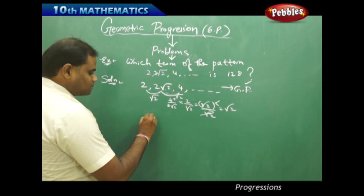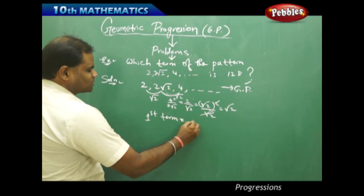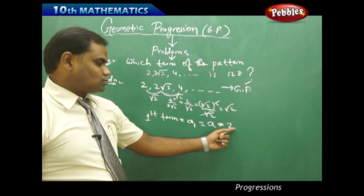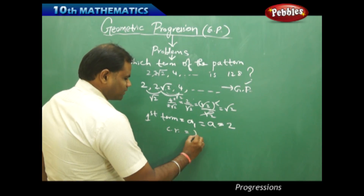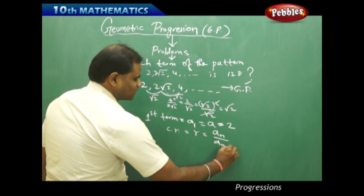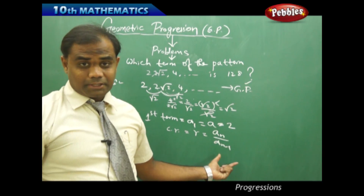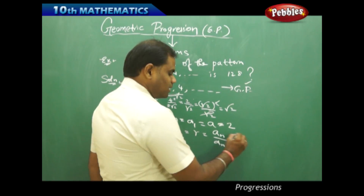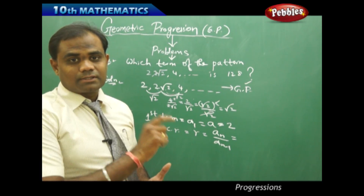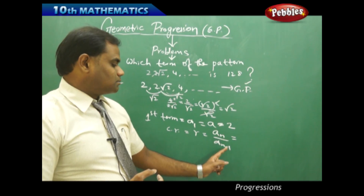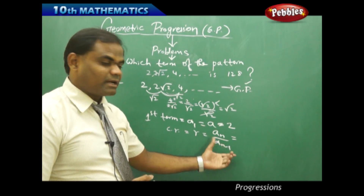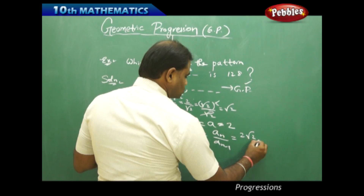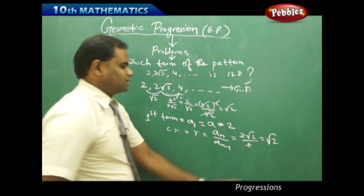Now to start with, my first term a₁ is a, which is 2. My a is 2, and my common ratio — given by the formula aₙ divided by aₙ₋₁, that is a term divided by its previous term — is the common ratio r. So if I take the common ratio of this I get 2√2 by 2, which is √2, which is r.